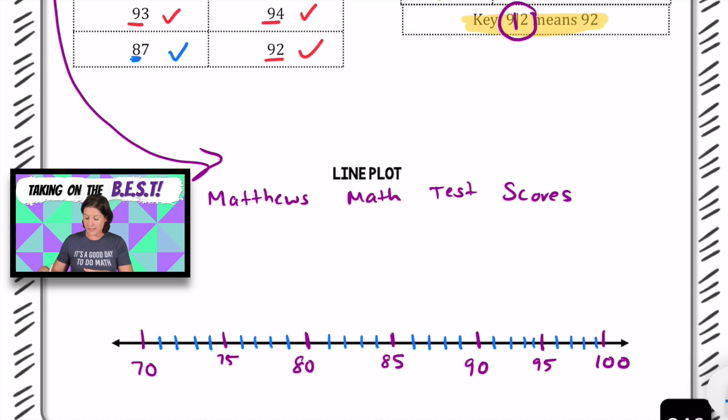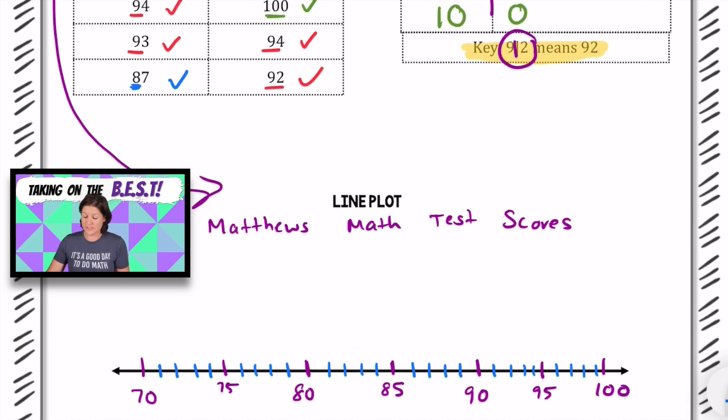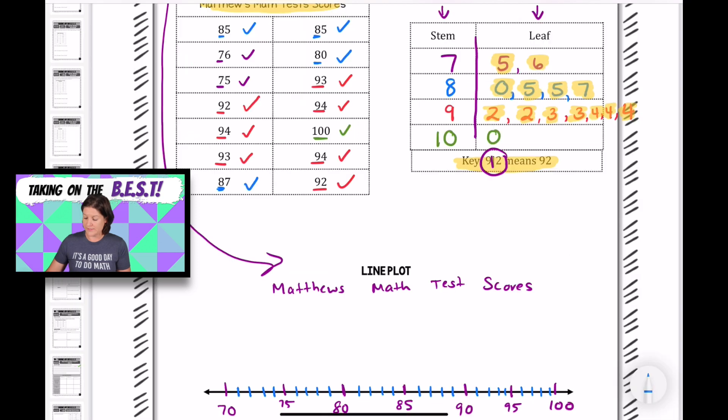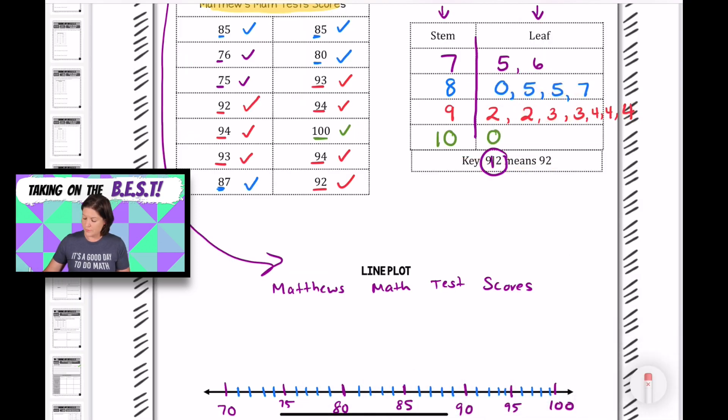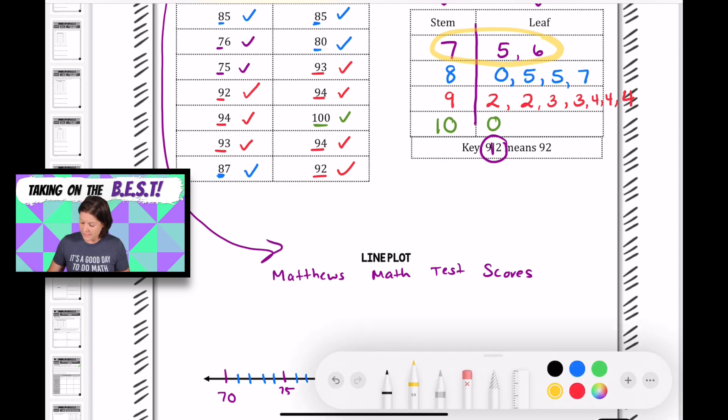So now we have our line plot. We have jumps of 10. We have 10 little marks to show our jumps of 10. Now is the easy part. Now we just have to take the information from the stem and leaf plot and place it onto our plan over here. Starting with the 70s, we have 75 and 76. So we have to find 75 on our line plot. Here's 75, place an X right there. Same thing for 76. That shows that we've marked those two test scores onto our line plot.